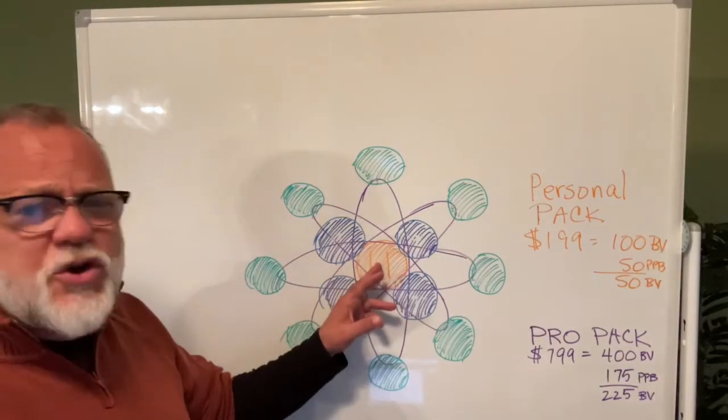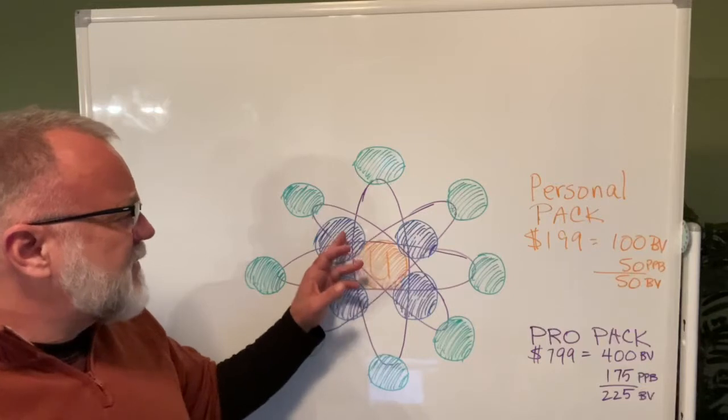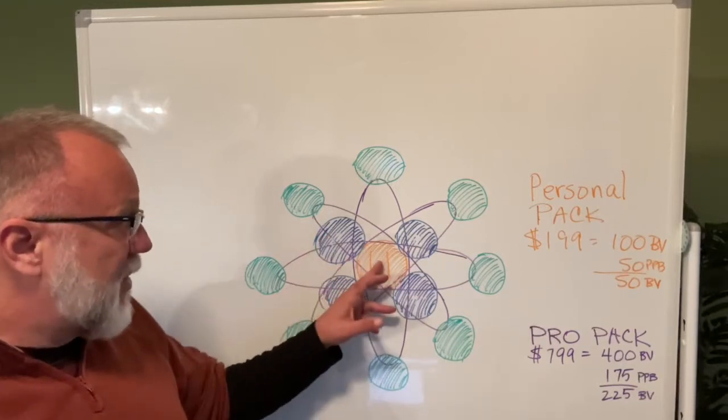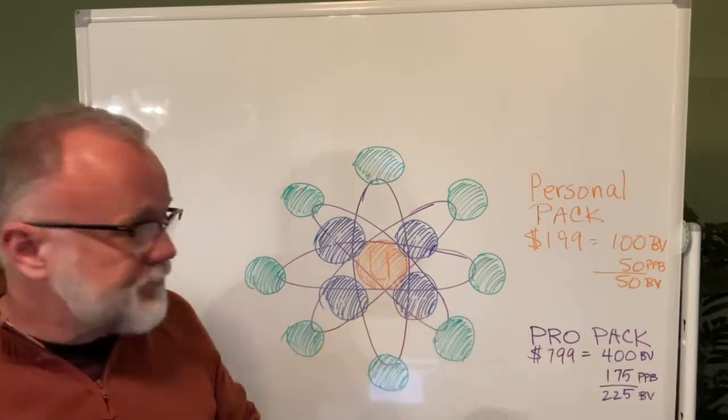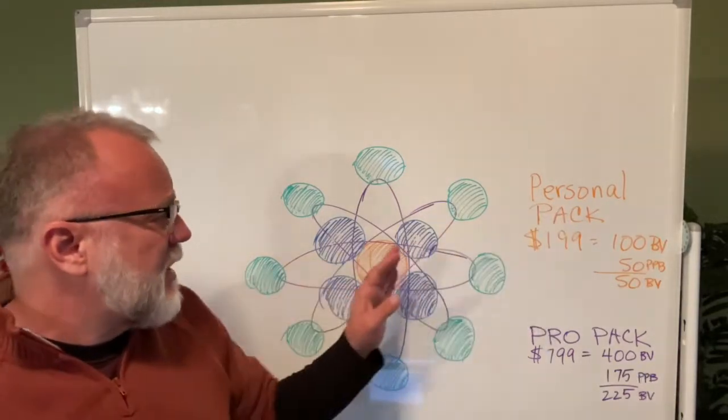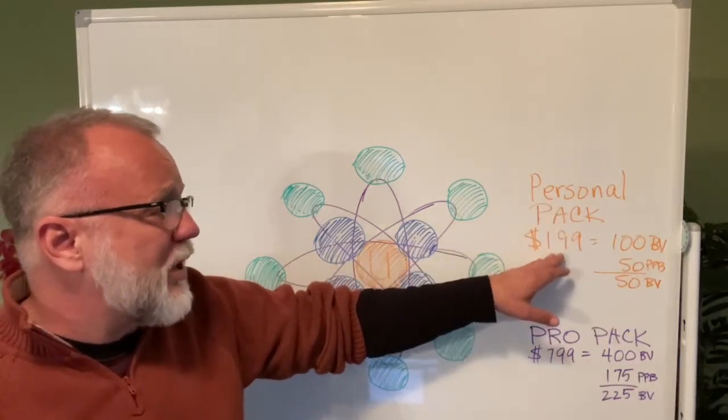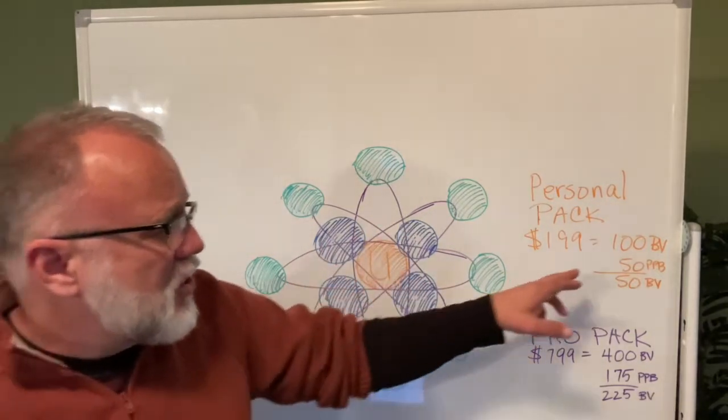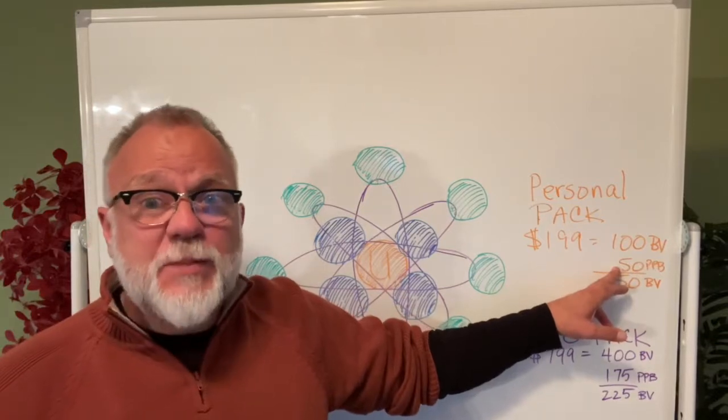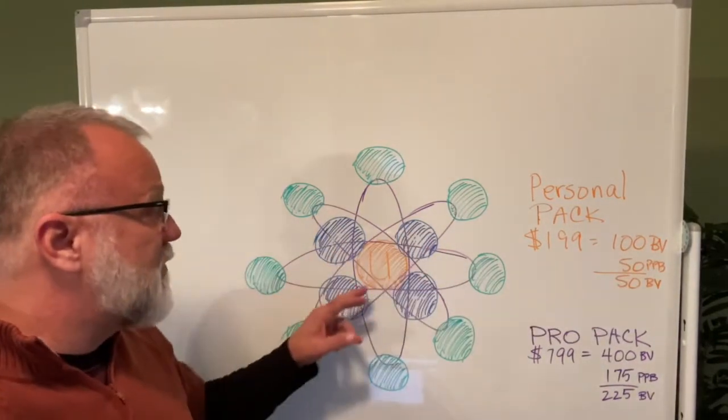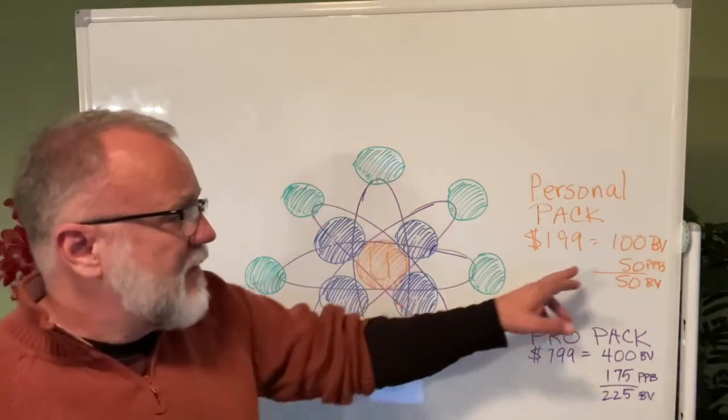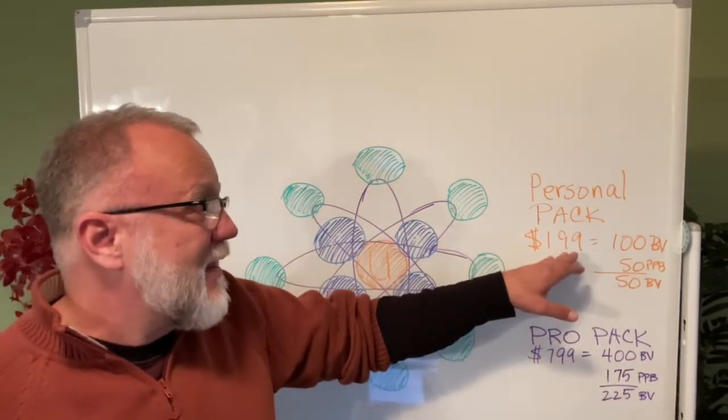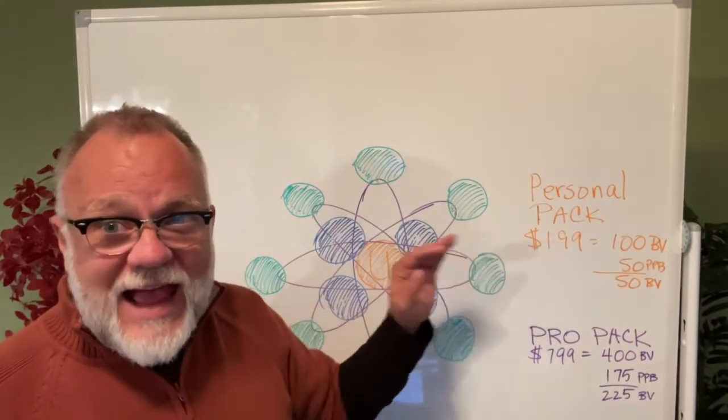This is your nucleus. Here you are in the middle. And let's look at these right here as being your personally sponsored individuals, the ones in the blue. You're in the orange. You personally have sponsored the ones in the blue. If you personally sponsor and say you come in as a personal pack, you've spent $199 and you personally sponsor four individuals that do the same, you will receive the $50 PPB promotional package bonus for each of these individuals that you have personally sponsored. 50 times 4 equals 200. You have earned all of your money back that you have placed into the company to start your own business. How easy was that?